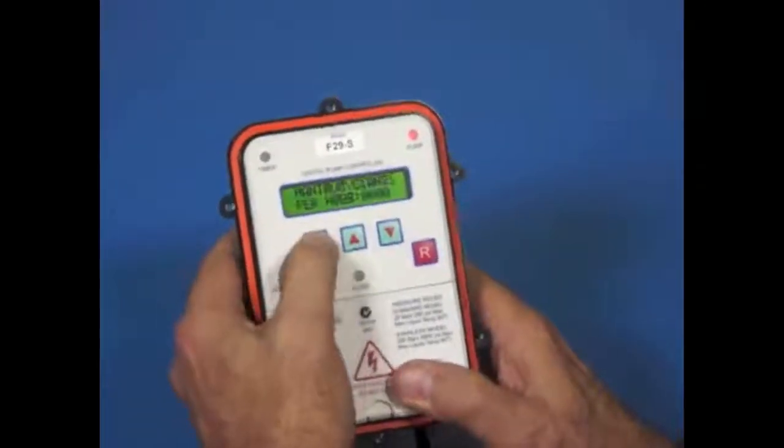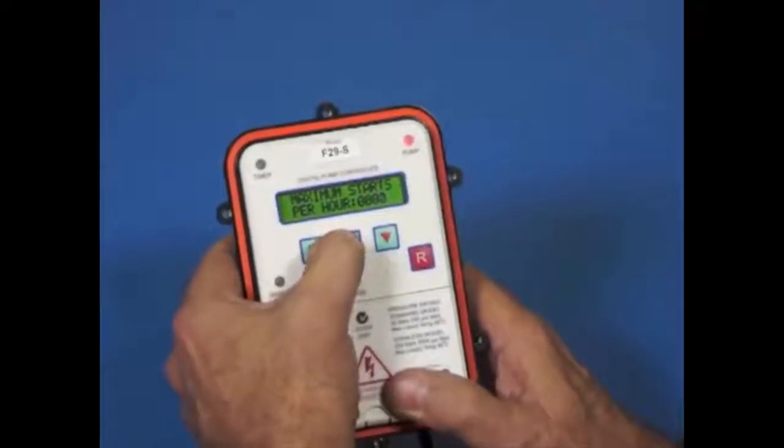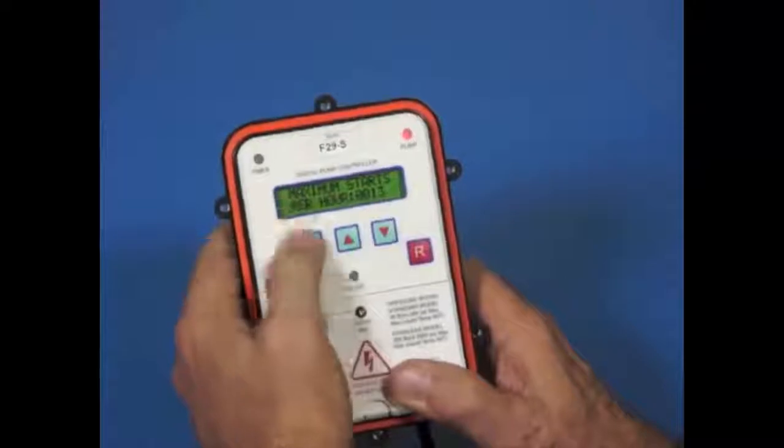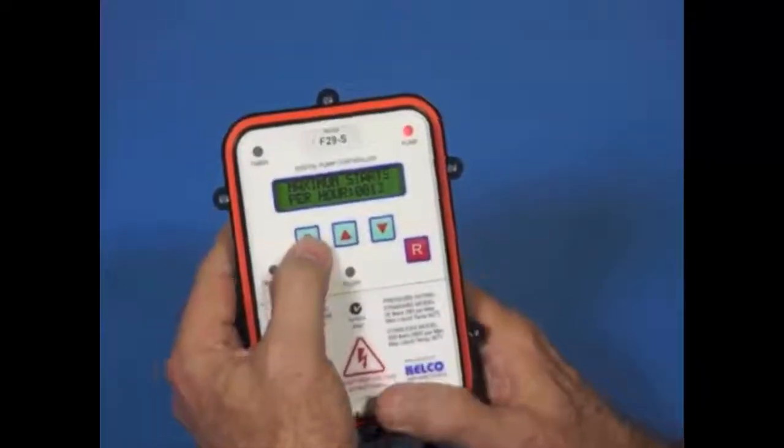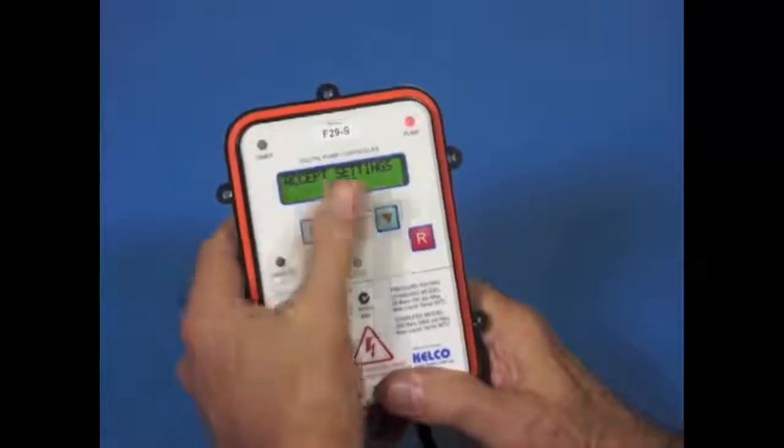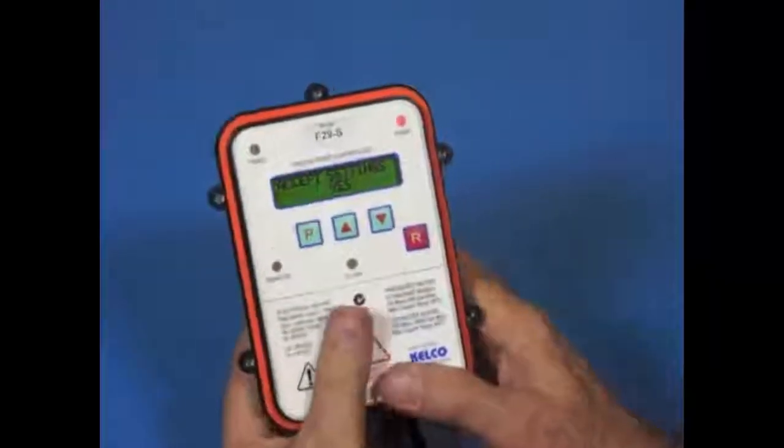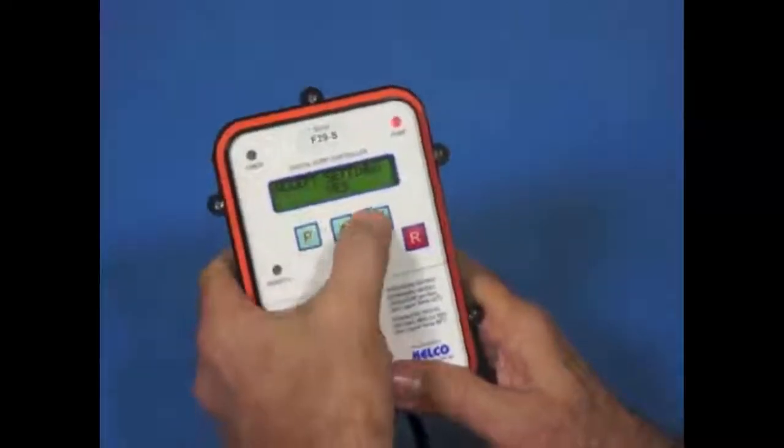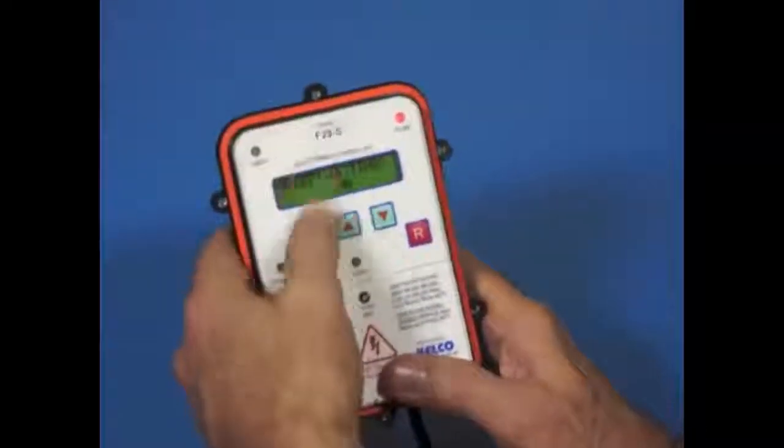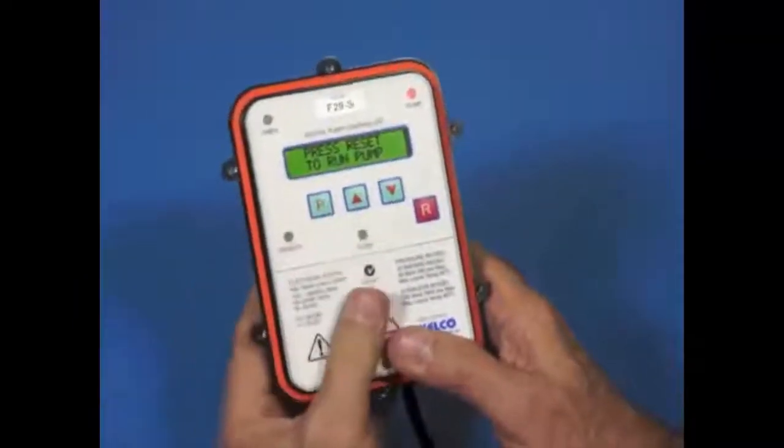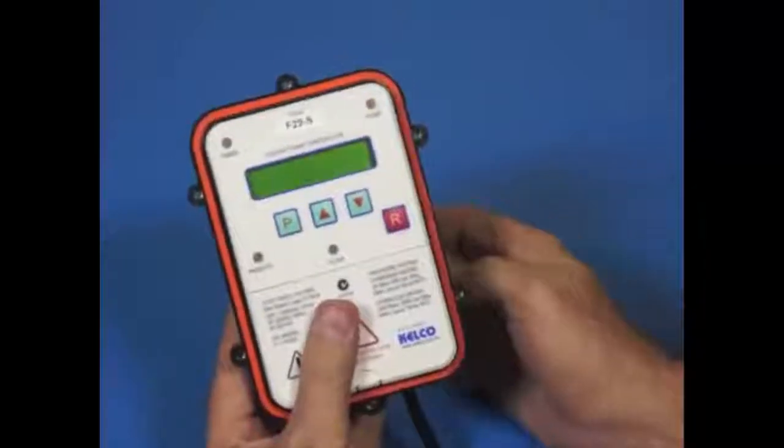Anti-cycling. Anti-cycling lets us set the number of starts per hour. We can set any value we like in there for starts per hour. And if that start rate is exceeded more than 10 consecutive times, the F29 will shut the pump down and display a message that the anti-cycling alarm has been triggered. Accept the settings, yes or no. If we select no to that, it'll take us back to the top of the menu and let us step through again. So if we press P to yes to accept it and then press reset to run the pump.